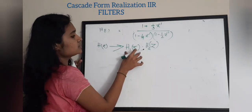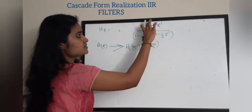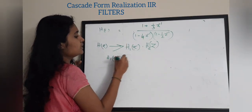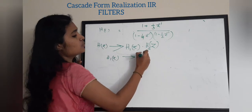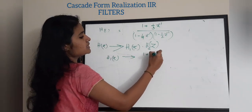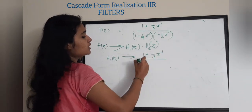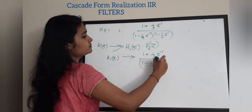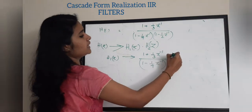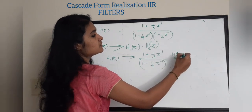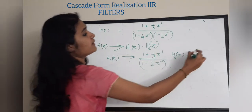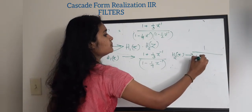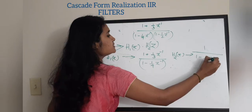H1(z) = (1 + 1/3 z⁻¹) / (1 − 1/4 z⁻¹) and H2(z) = 1 / (1 − 1/2 z⁻¹). What we have done is taken H(z) and split it into two sub-transfer functions H1(z) and H2(z).